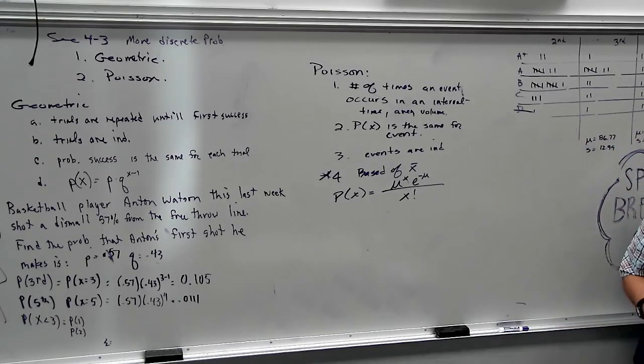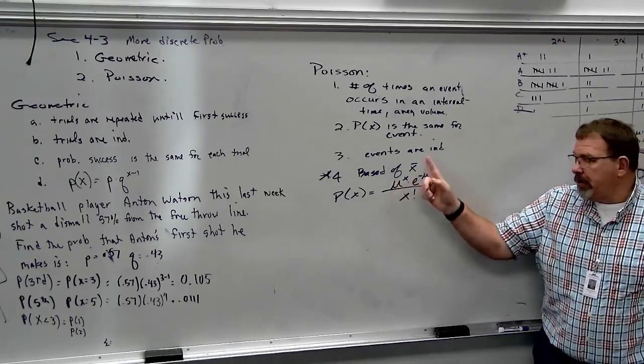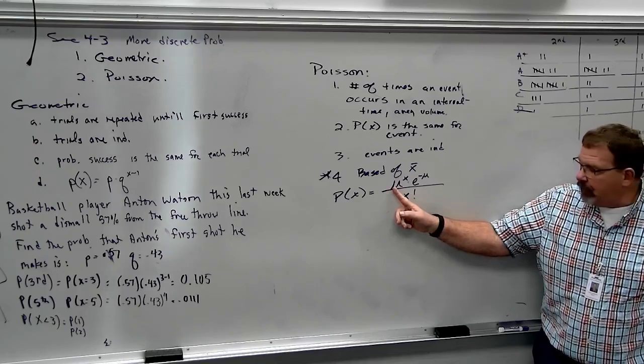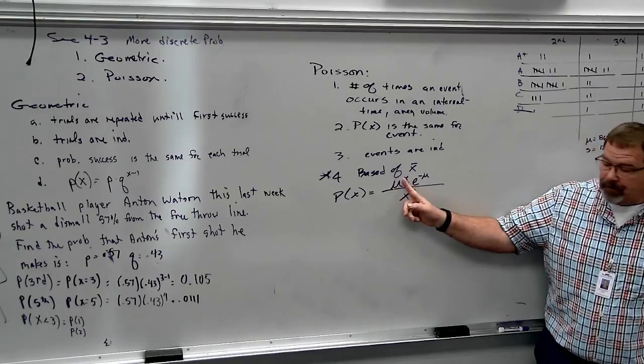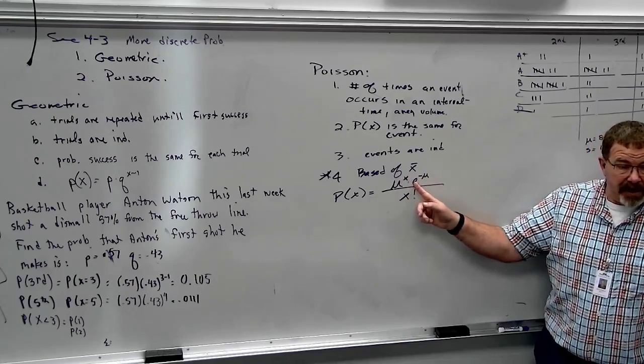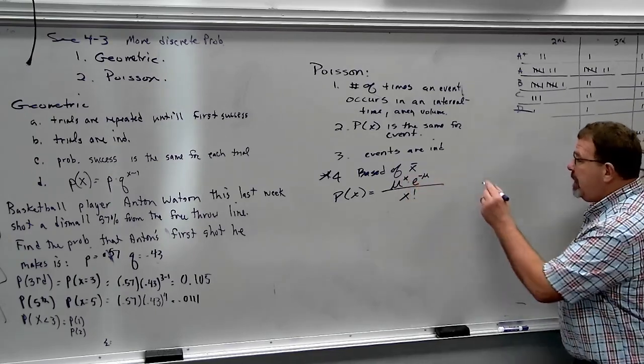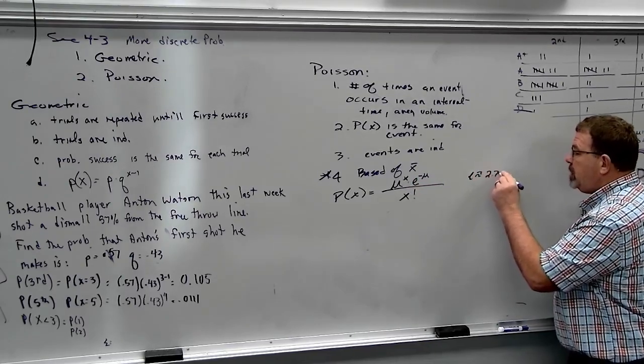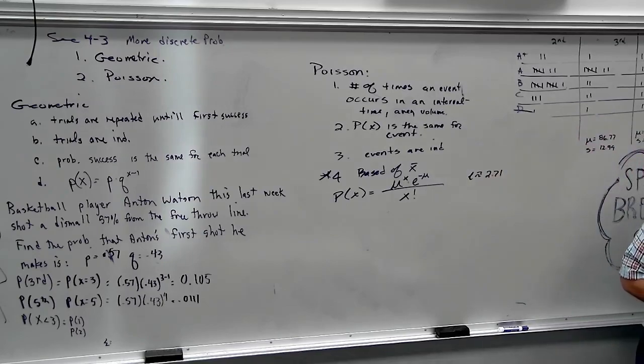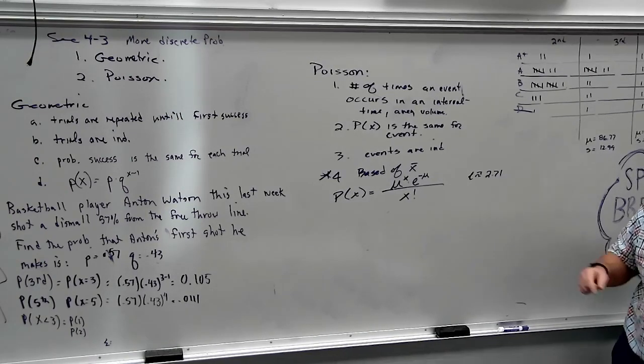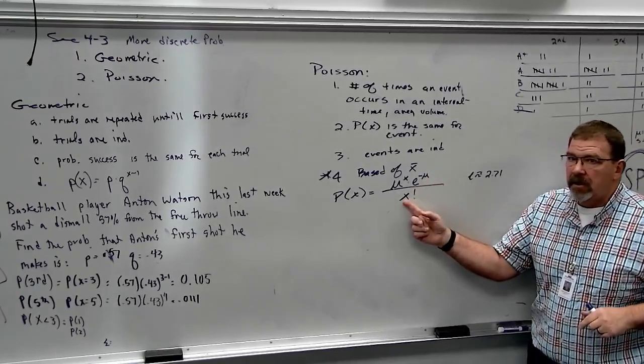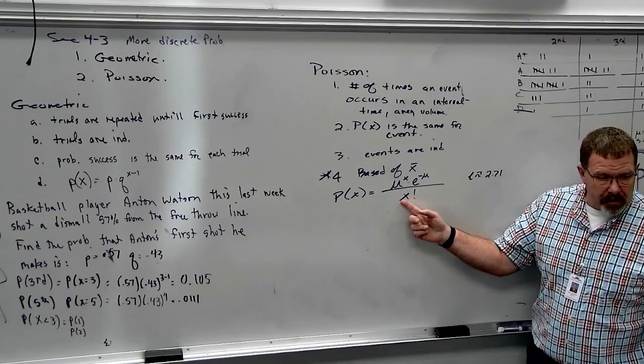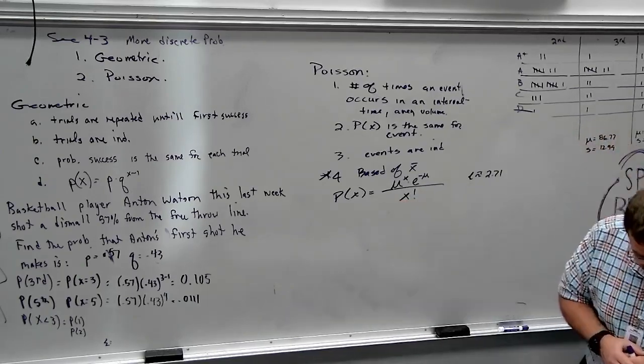Now, here's the formula. It is mu to the x times e to the negative mu all over x factorial. So, the formula is a little bit more complicated, but we just got to make sure we enter it right in our calculators. So, mu is our average. I know up here I put x bar, but it's based off of the mean, your average. X is the probability of your event. E is just a value on your calculator. You don't have to worry. It's just like pi. E has a value of 2.71, but I would rather have you just hit the E button on your calculator.